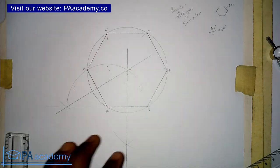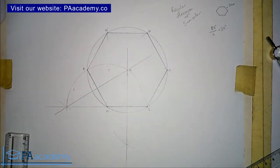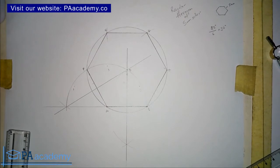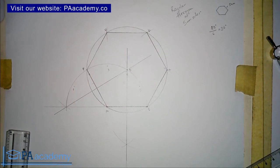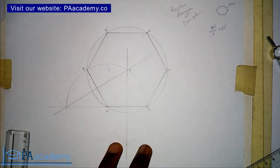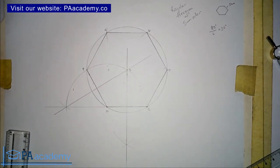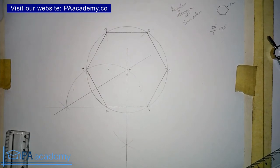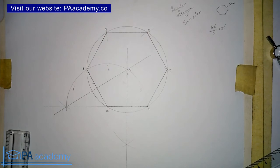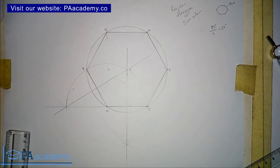Irrespective of the side length — whether you're working with five centimeters, less than, or more than — once you follow these steps you are going to have the desired results. If you want to know how to draw other regular polygons when given the length of the side, check the description of this video. I will leave a link to other regular polygons like pentagon and hexagon. If you have any questions or video requests, please leave them in the comment section below. Also check out our playlist on technical and engineering drawing, and visit our website at paacademy.co. Thank you very much, and I will see you all in another video.